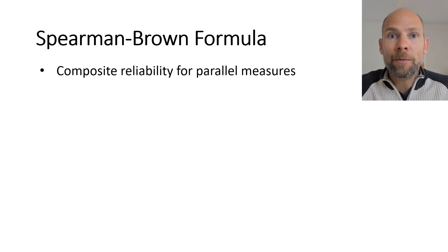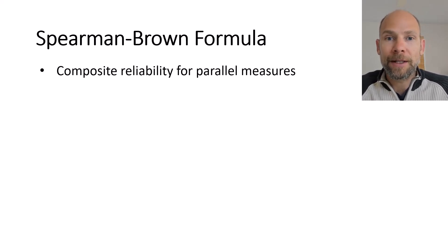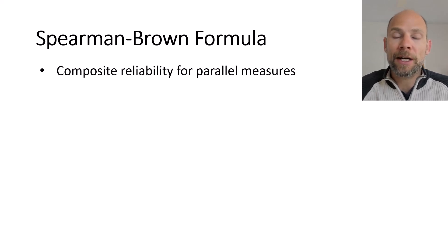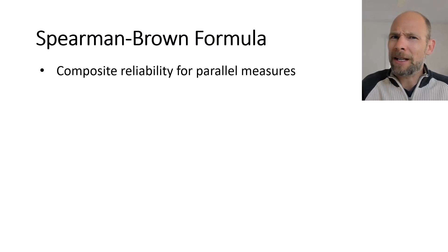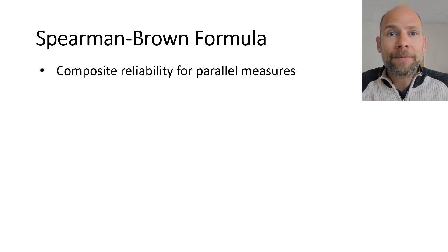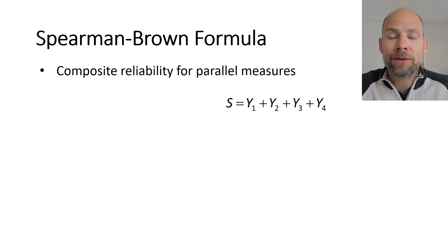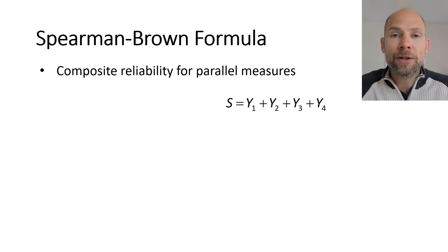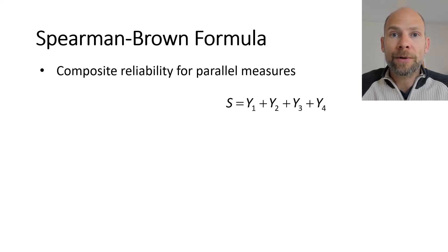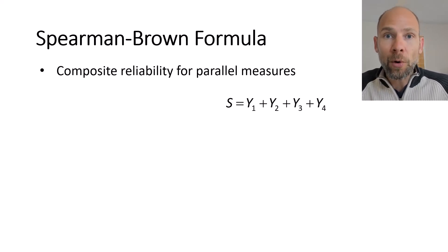On a conceptual level, the Spearman-Brown formula is a formula for computing a composite reliability coefficient when you have measures such as items or tests that are considered parallel measures in the sense of classical test theory. A composite is, in the simplest form, a sum score of multiple test score variables. For example, you may have four different tests for measuring intelligence, memory, or math ability, and those four components or sub-tests can be added up to an overall score.